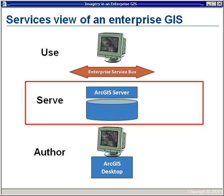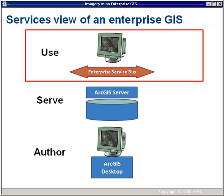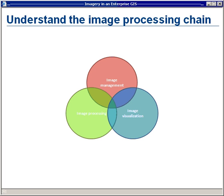ArcGIS Server embeds the core IT standards that define a services-oriented architecture, and thus provides a fundamental level of interoperability with other types of information services, such as an enterprise resource planning or ERP server. This means that users throughout the enterprise can seamlessly access geographic services in a variety of clients, and readily fuse those geographic services — or in today's terminology, mashup — with many other sources of information. So can we use these components and services views of an enterprise GIS to help integrate imagery into this context?